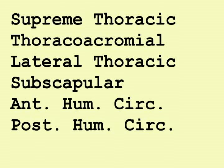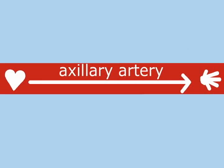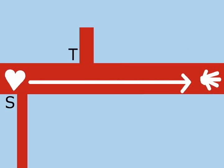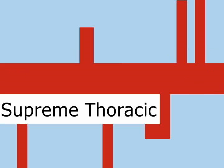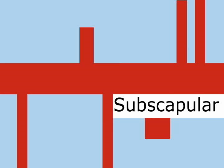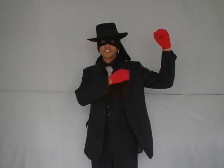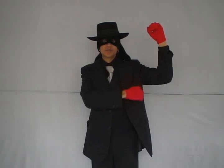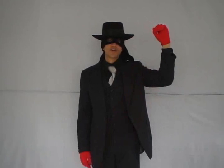Now that you know the names in order, you draw the branches directly off the axillary artery: Supreme Thoracic Artery, Thoracoacromial Trunk, Lateral Thoracic Artery, Subscapular Trunk, Anterior Humeral Circumflex Artery, Posterior Humeral Circumflex Artery — 60s Teens Love Sex and Pot. Congratulations!